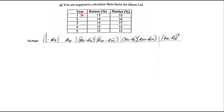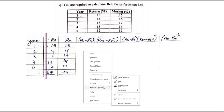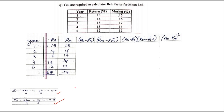The years are 1, 2, 3, 4, and 5. The security returns are 13, 14, 15, 13, and 12, with a total of 67. The market returns are 15, 16, 17, 14, and 12, with a total of 74. The averages are: RS̄ = 67/5 = 13.4 and RM̄ = 74/5 = 14.8.